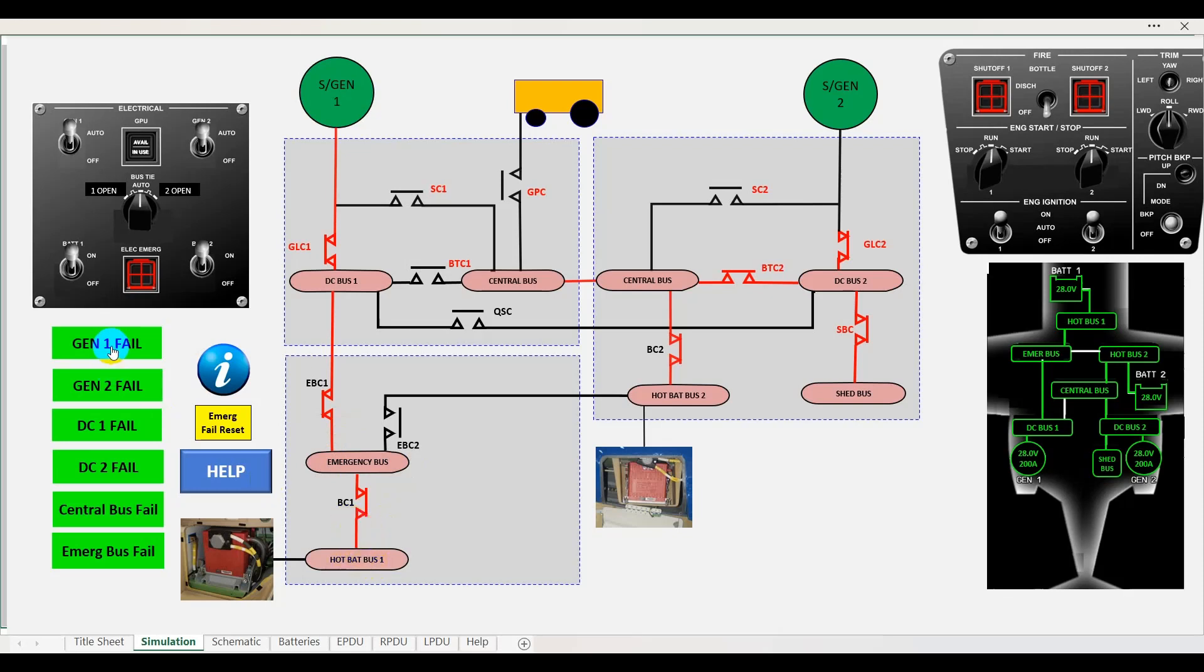We can simulate what happens with a generator failure. We can see that the system is automatically controlling itself with the bus ties opening and closing to compensate for the loss of supply. We can also close the DC bus 1, effectively isolating number 1 engine from the system but at the same time still supplying power to the two batteries so they will be charged.